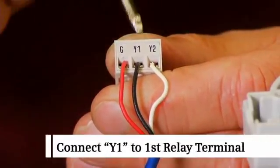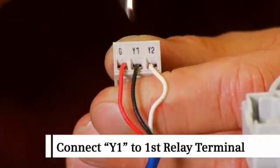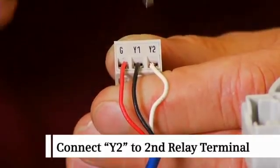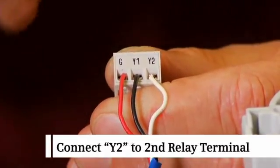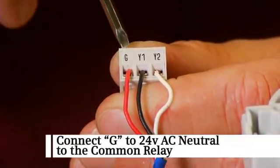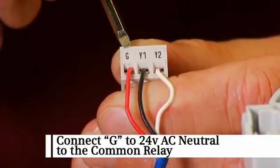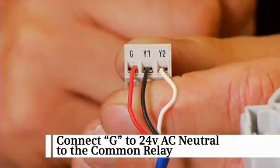Connect Y1 to the first relay terminal. Connect Y2 to the second relay terminal. And connect G to the 24 volt AC neutral to the common relay terminal.